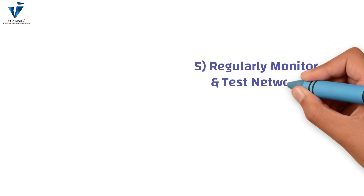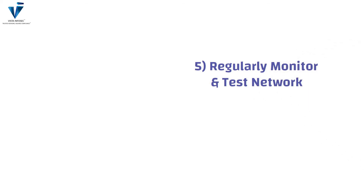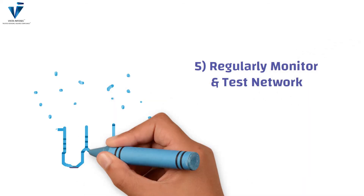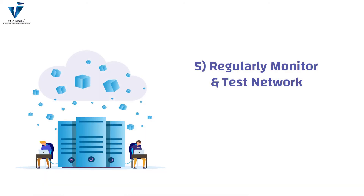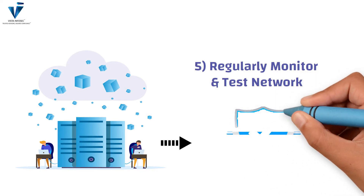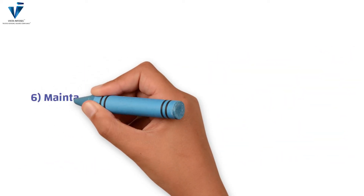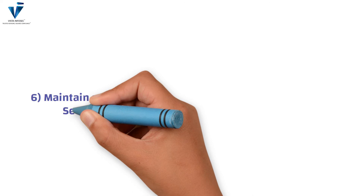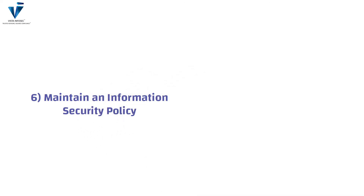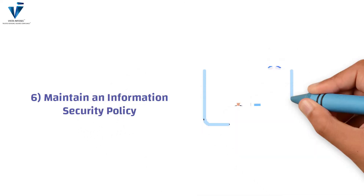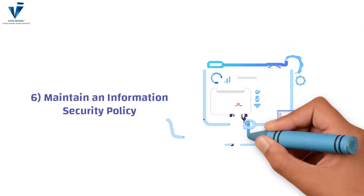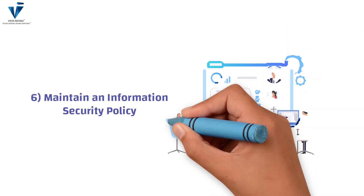The fourth requirement also includes restricting physical access to cardholder data. The fifth requirement is to regularly monitor and test networks. This includes tracking and monitoring all access to network resources and cardholder data, and regularly testing security systems and processes within the organization. The sixth requirement is to maintain an information security policy.